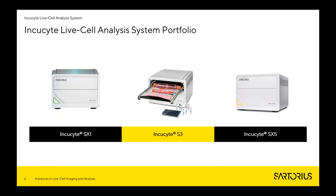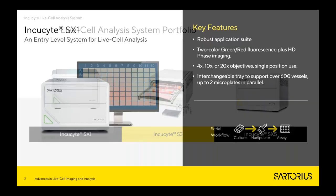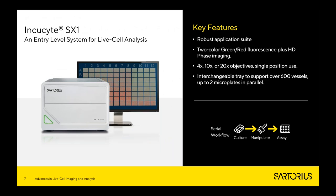Our Incusite portfolio consists of three systems. The Incusite SX1 is our entry-level system, offering the ability to analyze two plates at the same time. Based on the configuration, it is equipped with the same optics as the Incusite S3 and can therefore be upgraded to an S3 at any time. It also supports almost all of the applications one can do with all of the other Incusite systems.